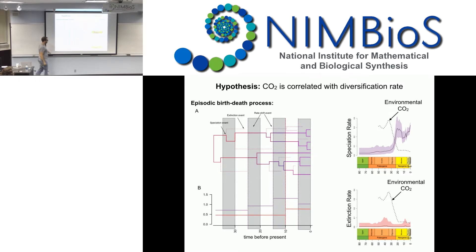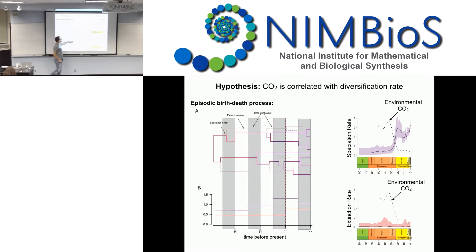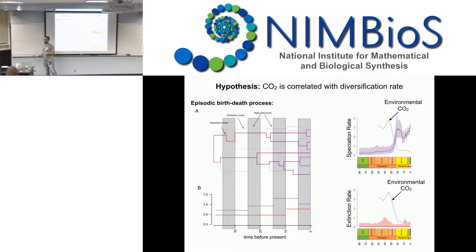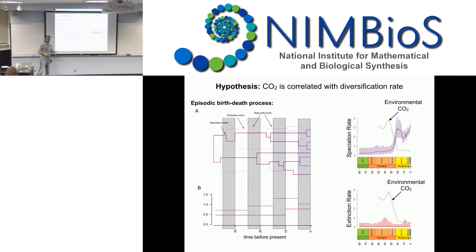Our recent work assumes an episodic birth-death process, estimating speciation and extinction rates that change episodically through time, to see if they are correlated to an environmental factor. The phylogeny we use for this is a daisy supertree and also a grass phylogeny with over 2,000 species.